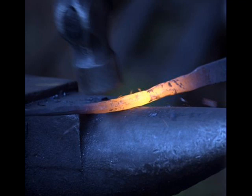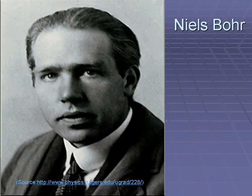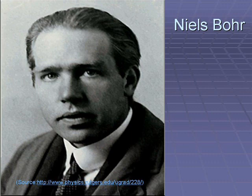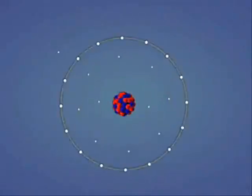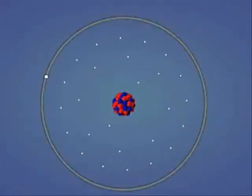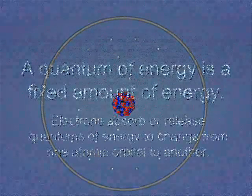The Rutherford model did not talk at all about how electrons were placed around the nucleus in an atom. In 1913, Niels Bohr proposed a solution to the shortcomings of Rutherford's model. Bohr proposed that an electron was found only in specific paths or orbits around the nucleus. Each of these orbits had a fixed energy, called an energy level. Electrons in the atom could not be between the energy levels, and to move from one energy level to another, an electron would have to lose a fixed amount of energy, called a quantum.